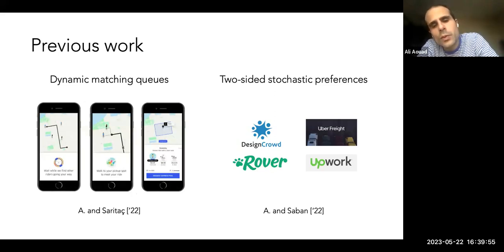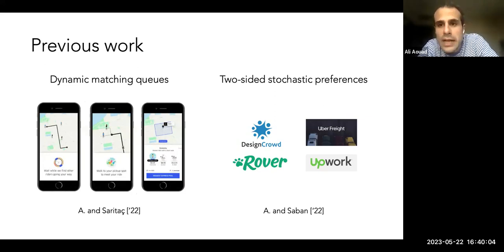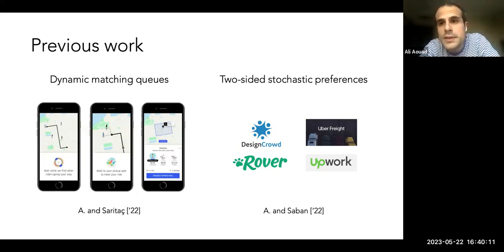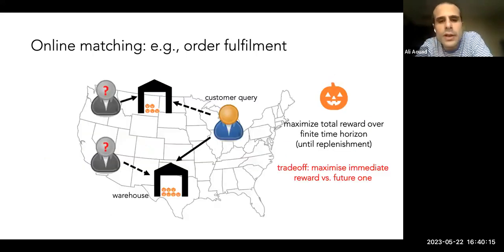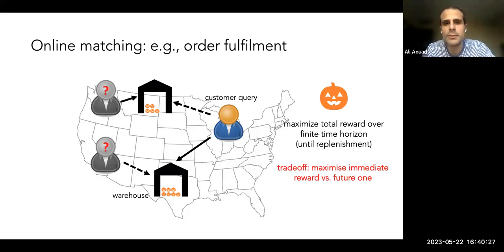These considerations require formulating different models, and the tractable relaxations we use to guide and analyze policies will vary once we introduce different sources of stochasticity. But in today's talk, I want to discuss something even more fundamental about the tradeoff between serving the current consumer myopically versus thinking about the future value of inventory.